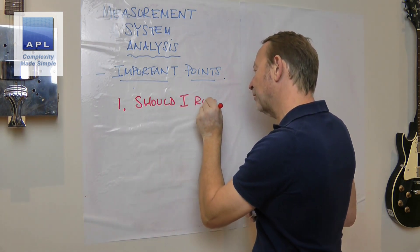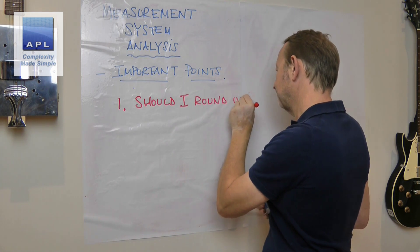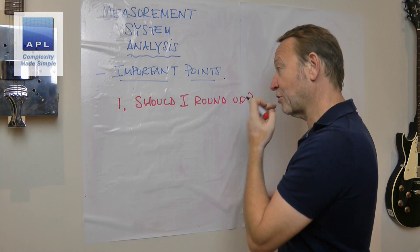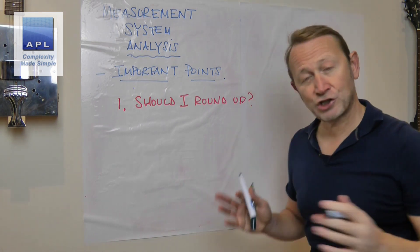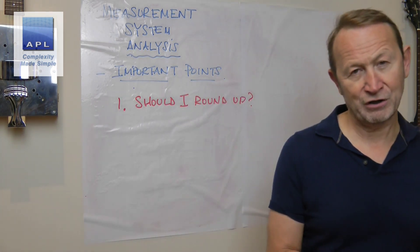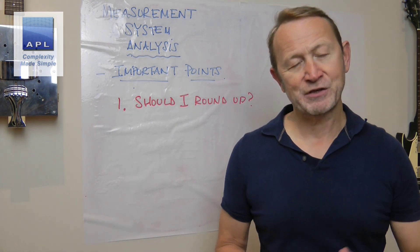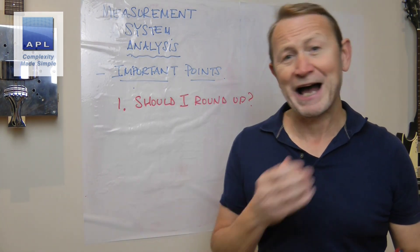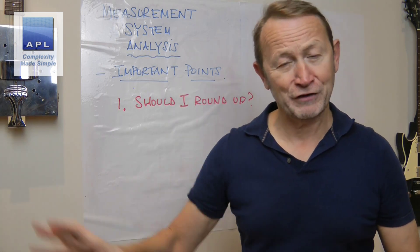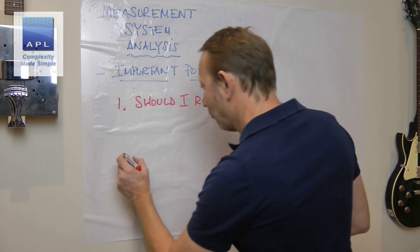What he's got is an additional decimal place — one more decimal place than the tolerance he has. He wants to know whether that's being a bit too anal, a bit too specific. Should he cut it off and just ignore the last decimal place?